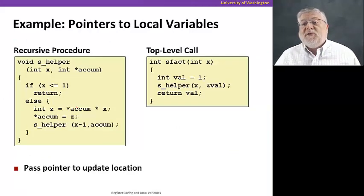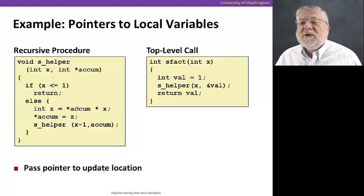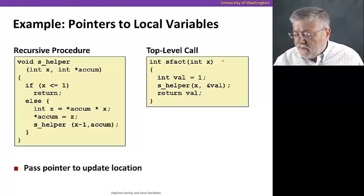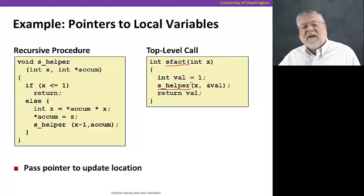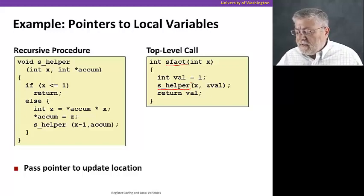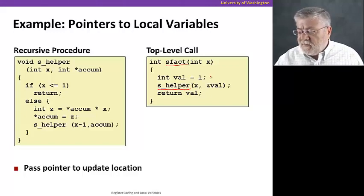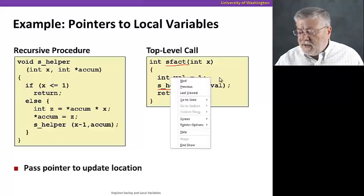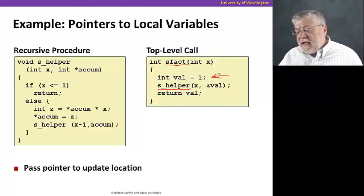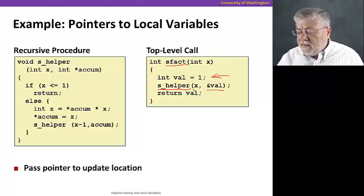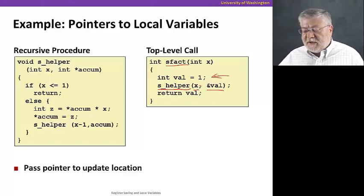All right. Now let's turn to local variables. Here we have two functions. We have a factorial function called SFACT, which calls a helper procedure inside of it. The way this works is that we create a starting point for the factorial, in this case the number one here, at the beginning of SFACT. And what we're gonna do is pass a pointer to that value, an address, along with the value of the factorial we want to reach, X, and pass that to a helper function, which is defined here on the left.